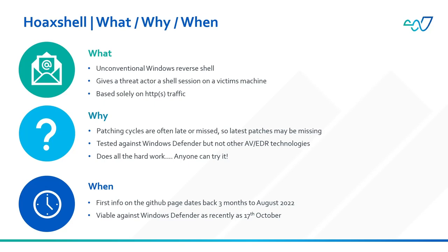HoaxShell has been doing the rounds on Twitter and various other websites for the past three months or so, and as recently as the 17th of October it was still viable as a method for attacking machines protected by Windows Defender. There has also been an evolution of the HoaxShell code recently called Villain, released by the same white hat hacker.